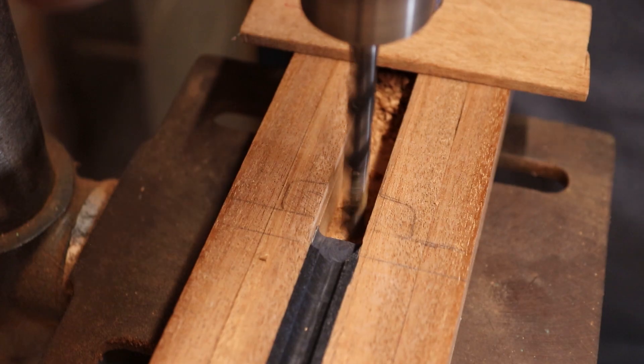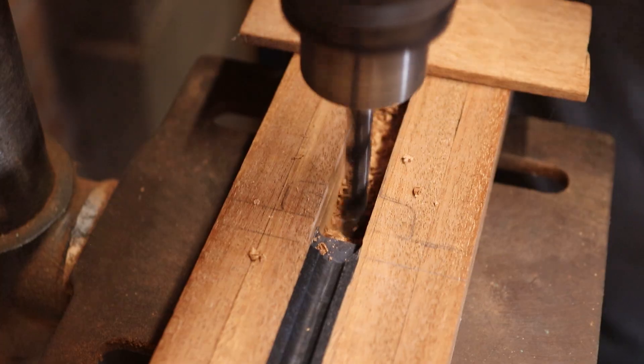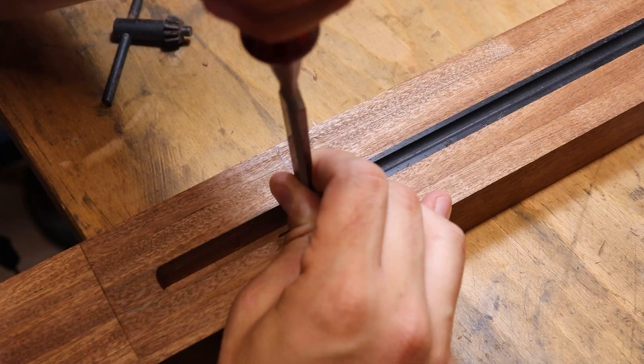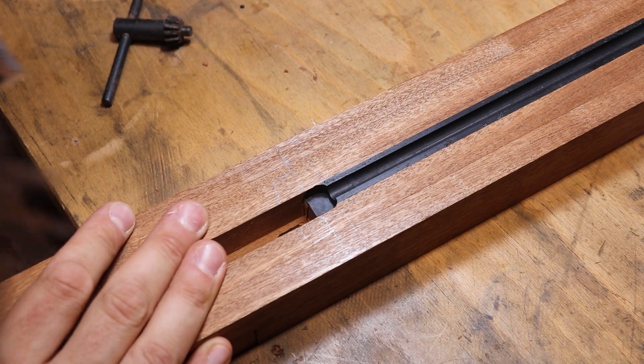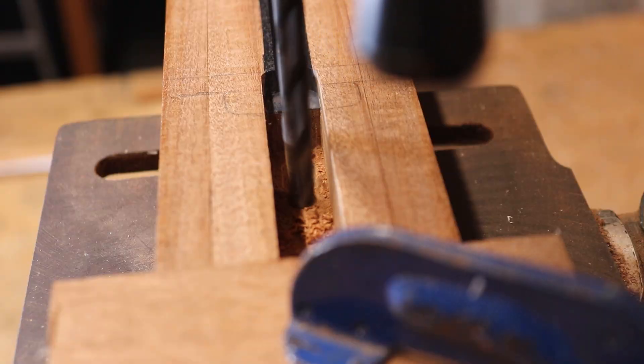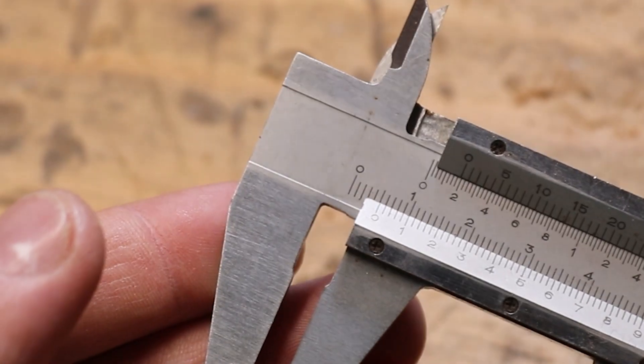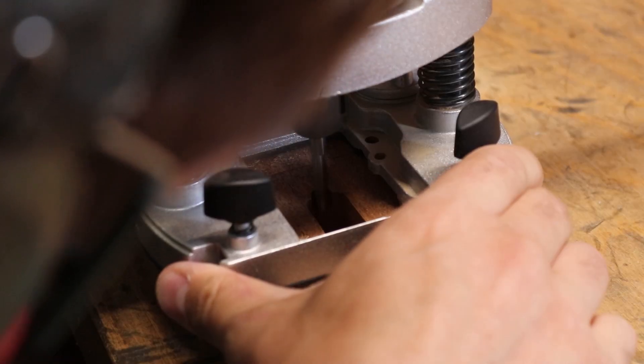So far so good. Next I decided to cut the hole for the trigger. Once that was done, I then moved on to carving out the recesses for the front and rear mounting points.